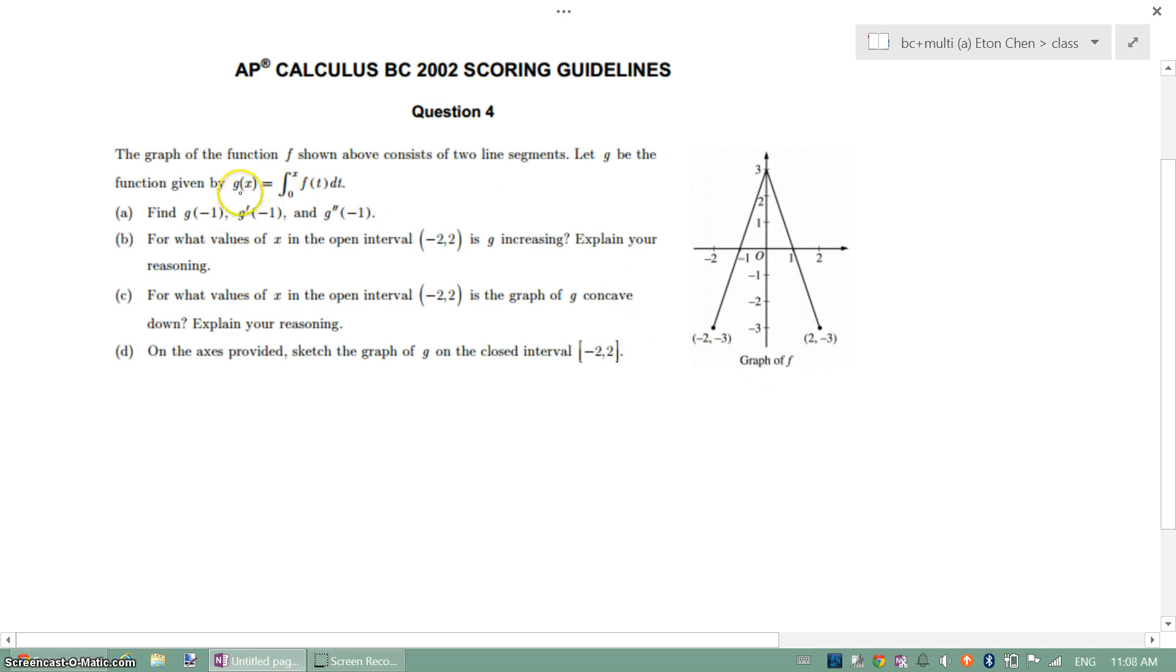So we're given this graph, and this graph is function g equal to integral of function f. And we're asked to find g, g prime, g double prime. So the first part is pretty easy, we just plug in negative 1 to here.